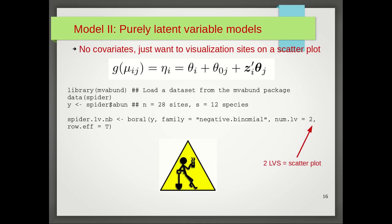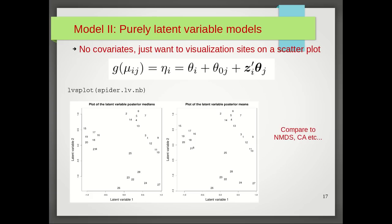To fit this model in BORAL, we now don't have an X because we have no covariates. We're going to assume negative binomial counts because we saw overdispersion in model 1. We have two latent variables, and I'm also going to include the row effect to control for site total abundance. After fitting this model, you can then apply the lv.plot function, which can construct two ordination plots: one based on the posterior medians, the other based on the posterior means of latent variables.